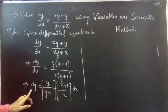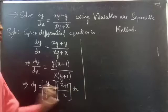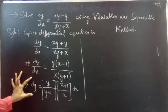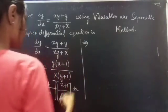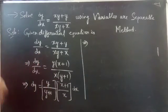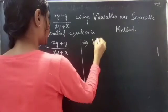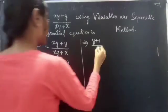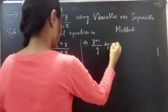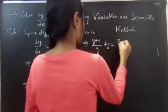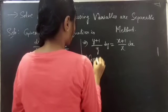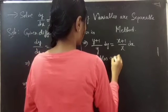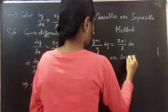In the LHS you have differential dy and in the RHS you have differential dx. So we will take all the y terms to the LHS and x terms to the RHS. You can write this as (y+1)/y dy = (x+1)/x dx. Here the variables are separable.